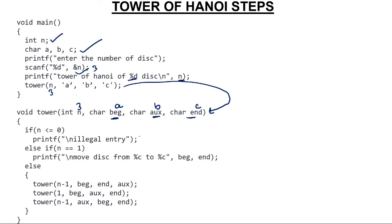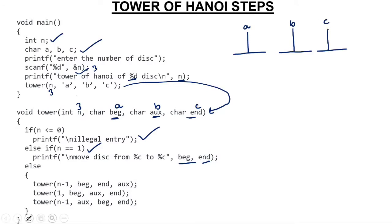Beginning means the starting pole, auxiliary means the middle pole, and end means the last pole. If n is less than zero, that is an illegal entry — if there is no disk, how will you solve it? If there is only one disk, move the disk from beginning to end. For a single disk arrangement on pole A, you simply move it from beginning to end. If there are more than one disk, this condition is false and the function breaks into three parts, as already explained in the algorithm.